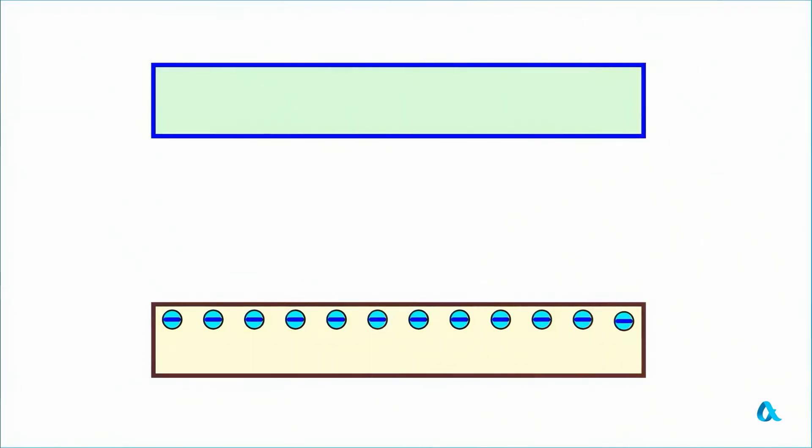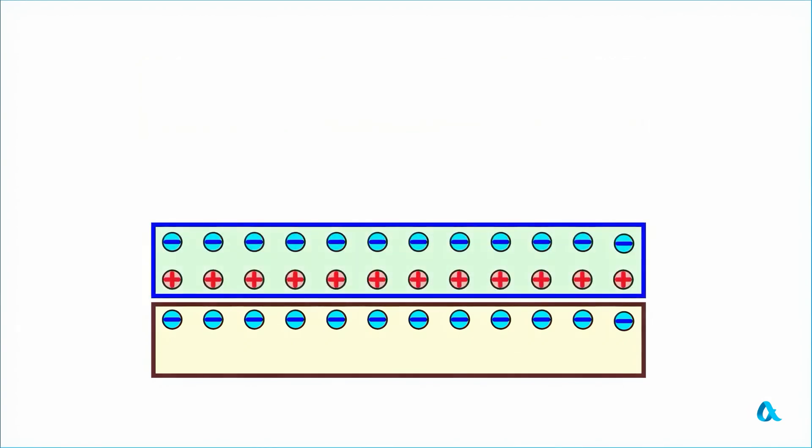The metallic plate is initially electrically neutral, while the surface of the plastic is negatively charged. When I place the metallic plate on the plastic one, a redistribution of charges occurs on it. Electrons are repelled and moved to the upper side of the plate, while the lower side becomes positively charged.